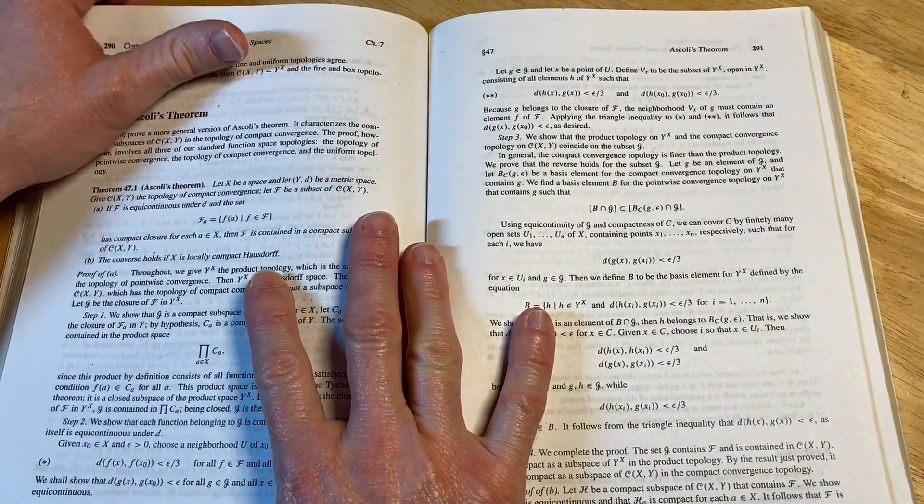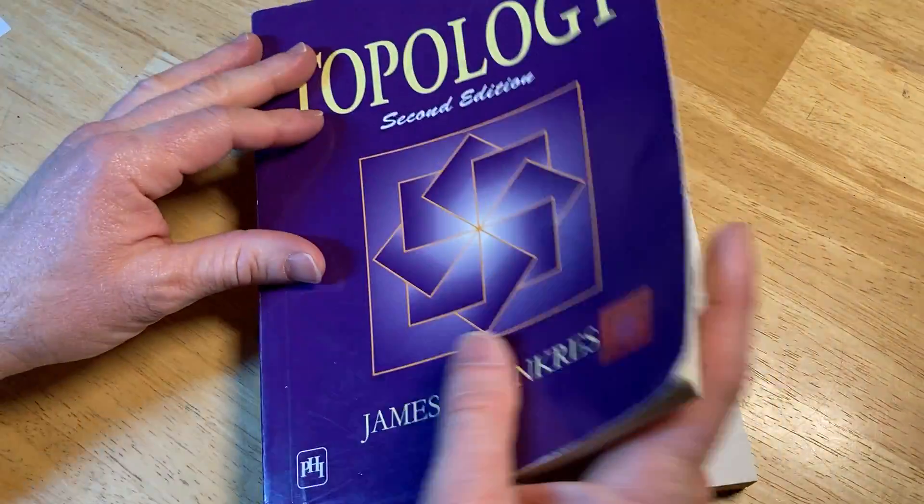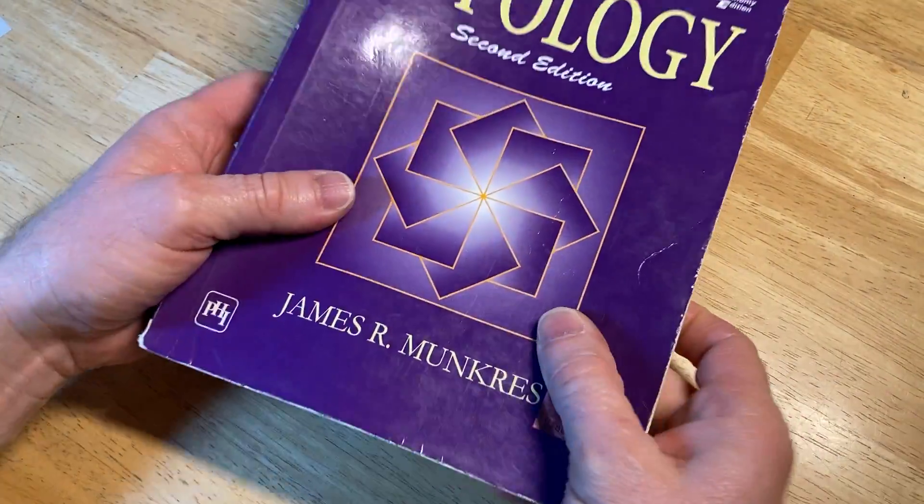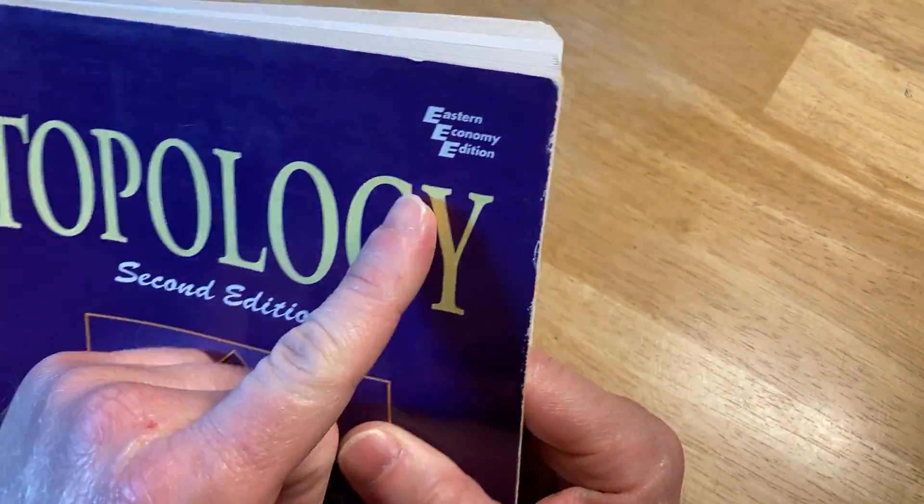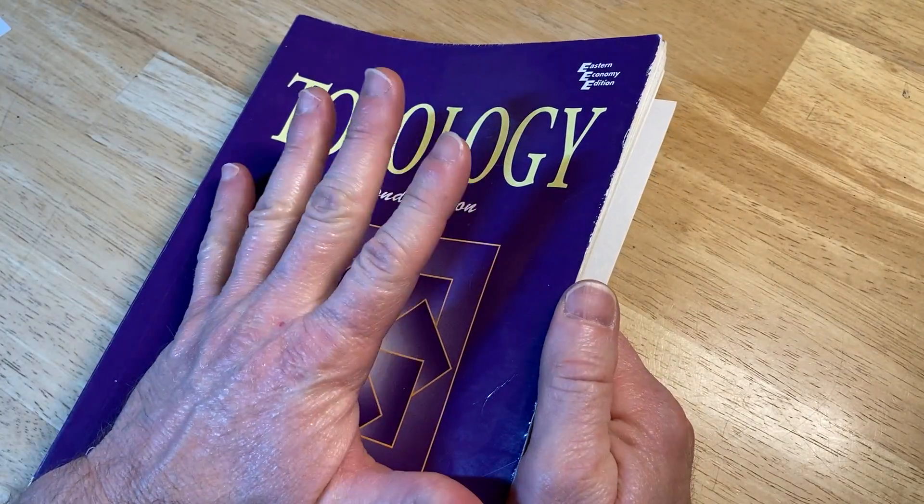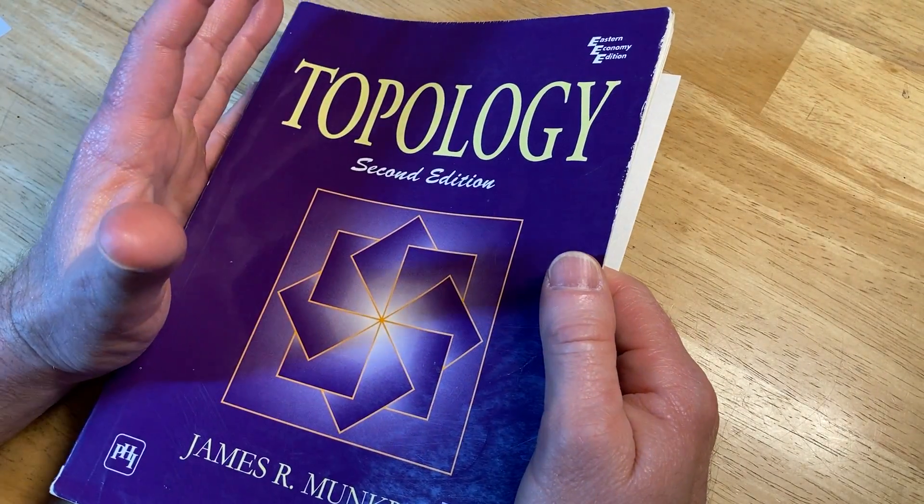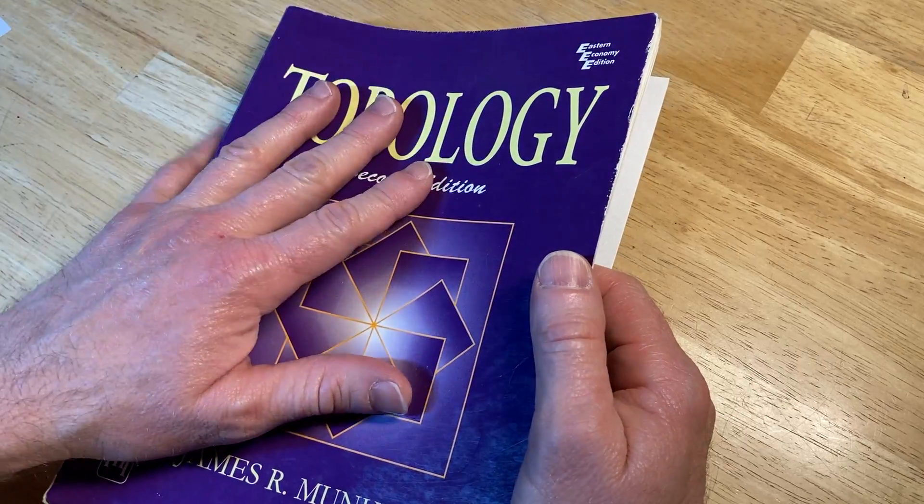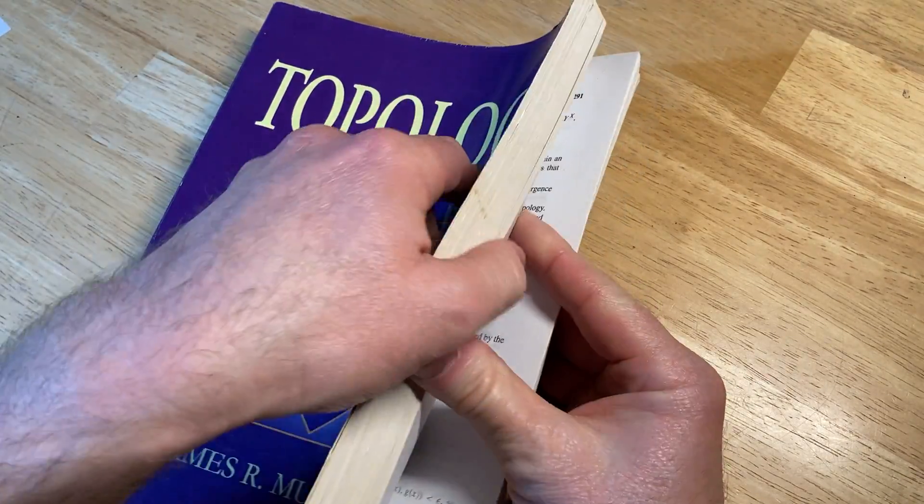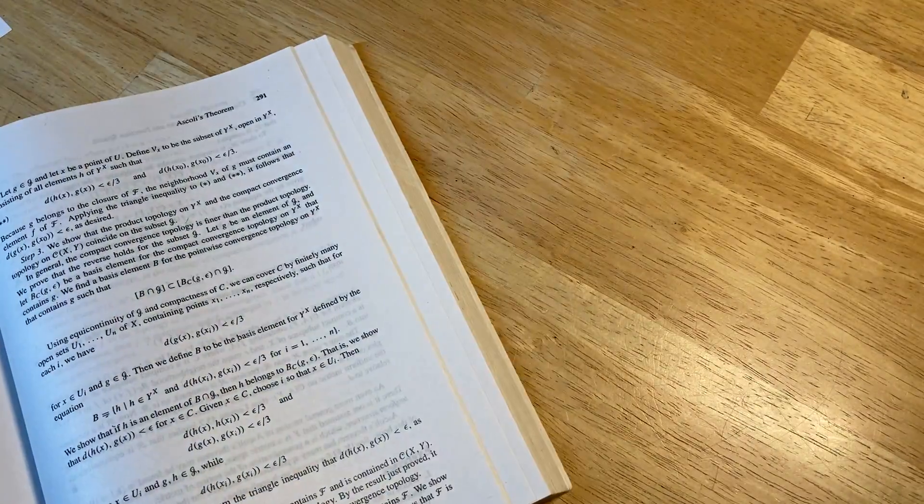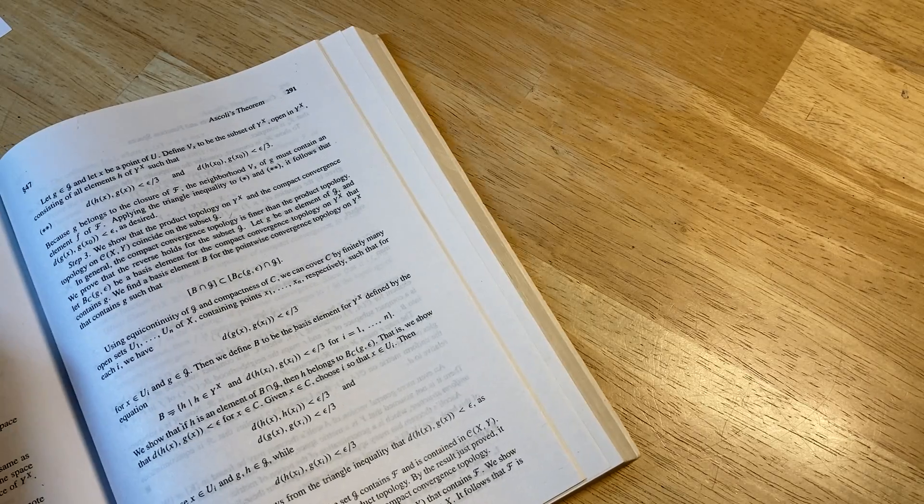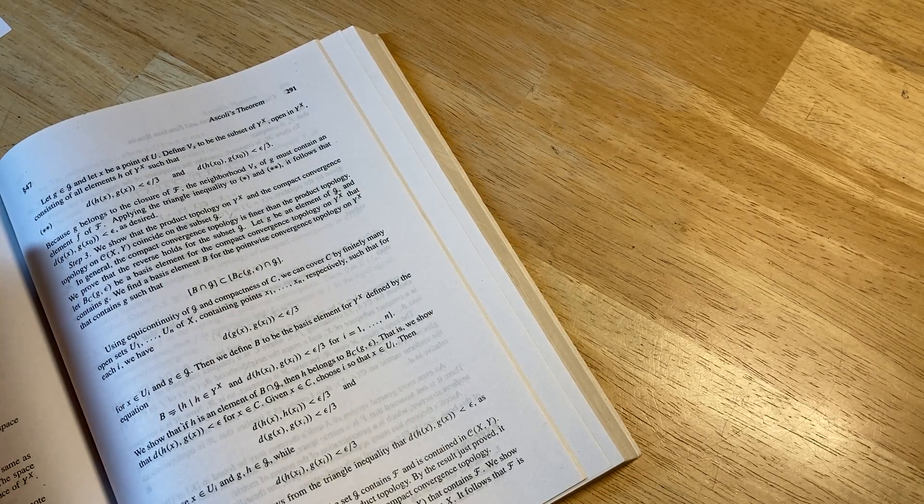It's an amazing book. It is Topology by James R. Munkres. This is the Eastern Economy Edition. I bought this book a long time ago, and the hardcover was more money, and I didn't have the money. So I got this cheaper version instead.